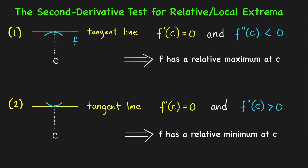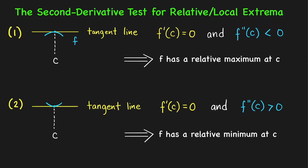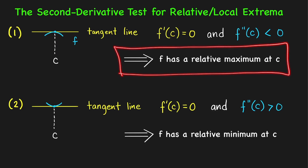Now let's look at the first case. We have a horizontal tangent line at c, and the second condition is that the second derivative at c is negative — it is less than 0. If the second derivative is less than 0, then the graph is concave downward at x equals c. Therefore, it is clear that we have a relative maximum value at x equals c, and the function f has a relative or local maximum value at c.